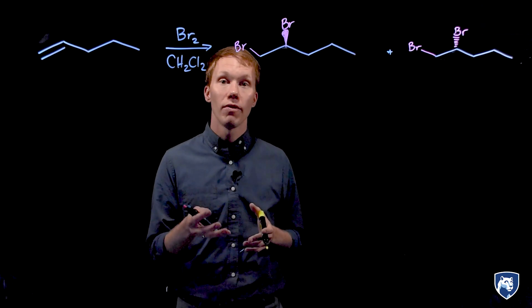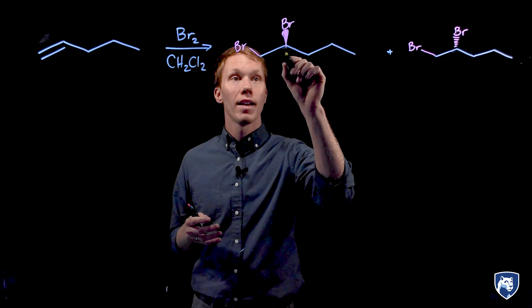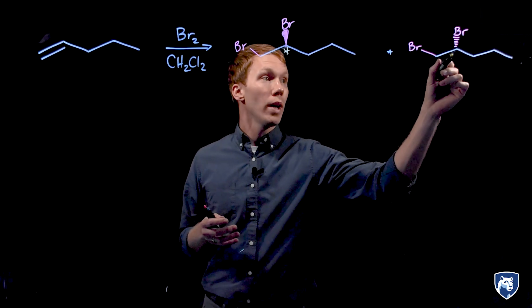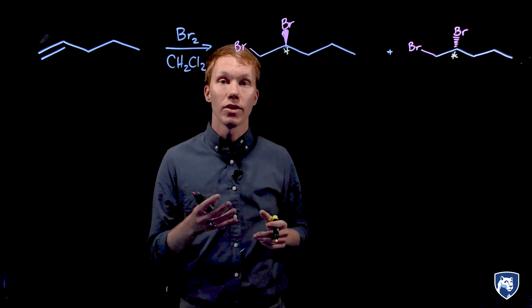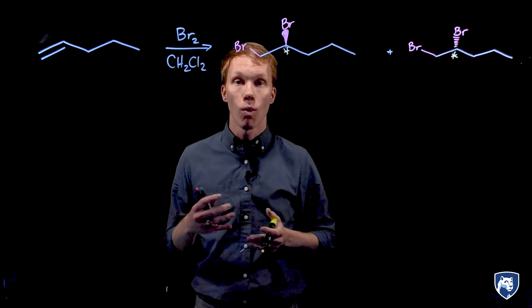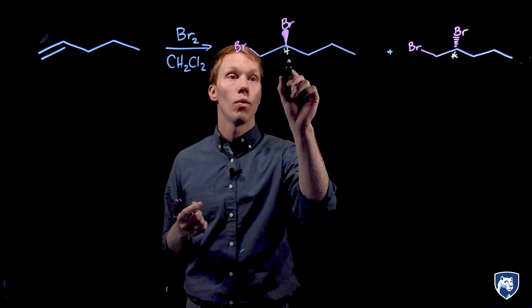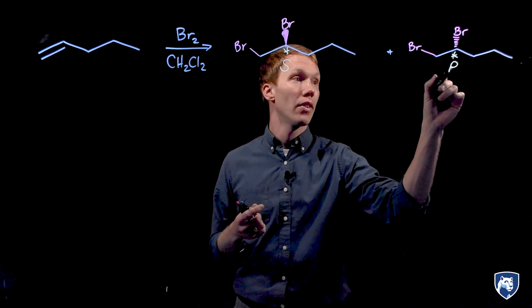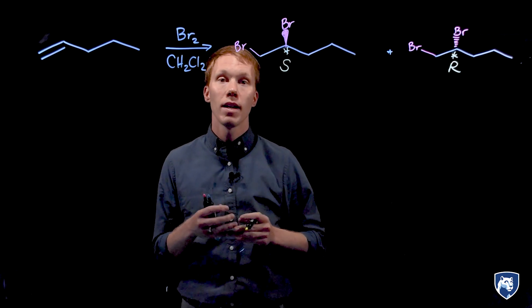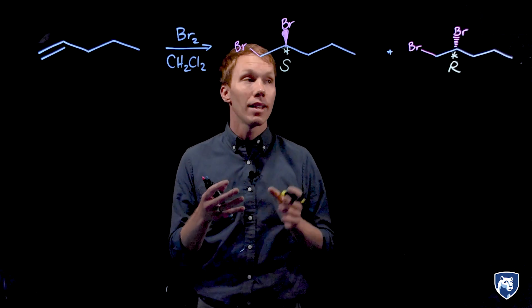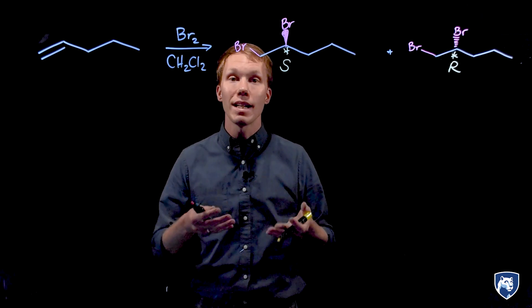Let's look at the stereochemistry of the products that we produced. Here, there is one chiral center generated when we added the two bromines across the alkene in one pentene. These two compounds are enantiomers. One has S configuration, the other has R configuration.